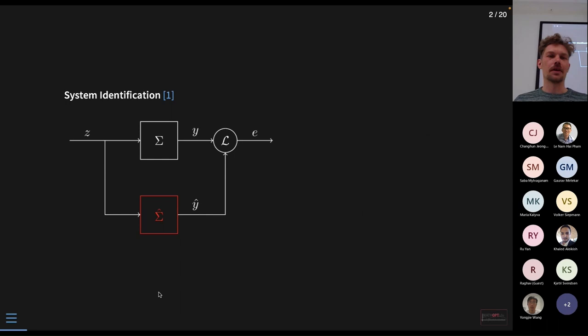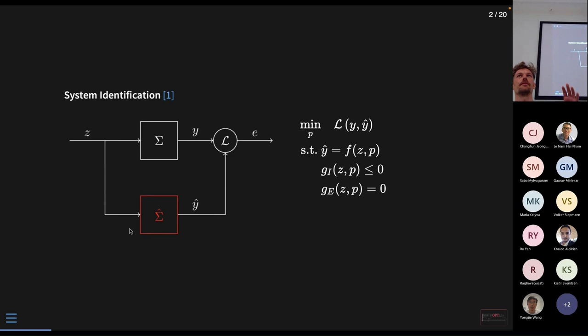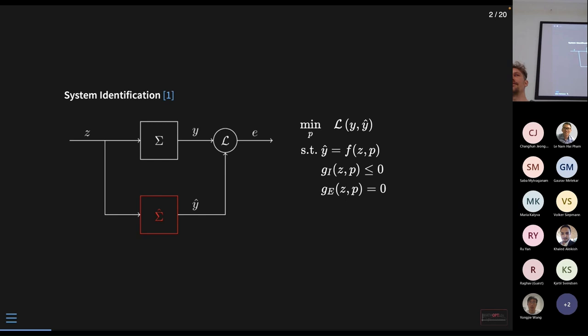On the other hand, we have classical system identification. We have a system Sigma we want to observe, some variables going into the system denoted by Z, some observed output Y, and we compare that with our estimator system. We end up with this classical comparator problem with some loss function, and we want to minimize the error. What we typically assume is known — and this is a key point — is the function inside our system model, but this is actually the hard part.